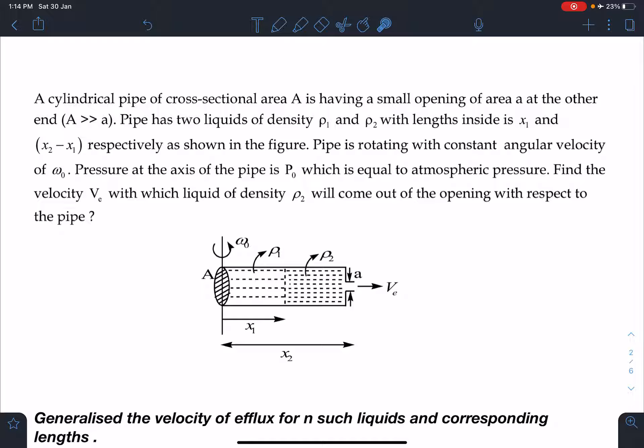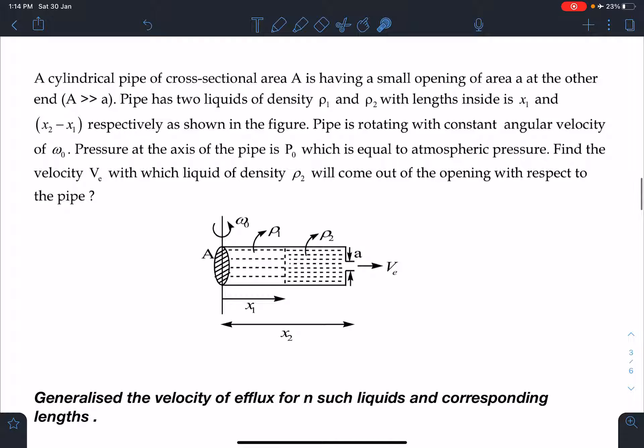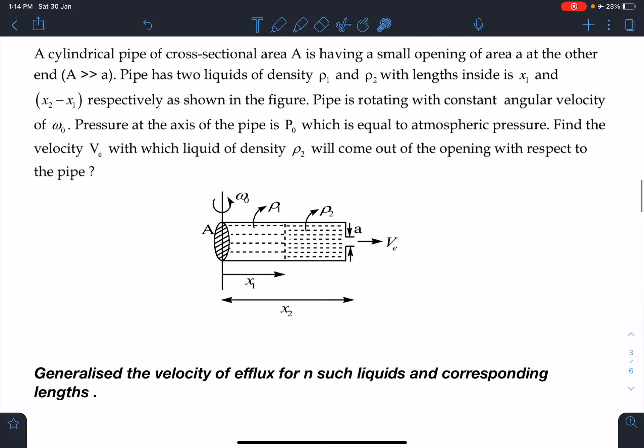We need to find out this velocity of efflux with respect to pipe. And then, the second part is generalize the velocity of efflux for n such liquids and corresponding lengths. So, we need to generalize this result for n different type of liquids.